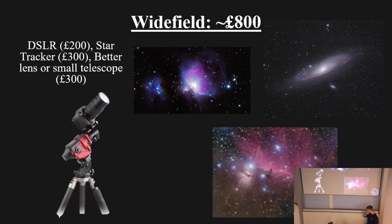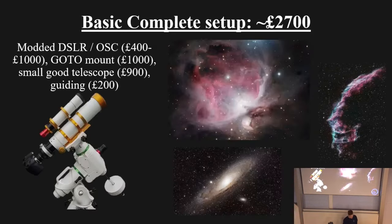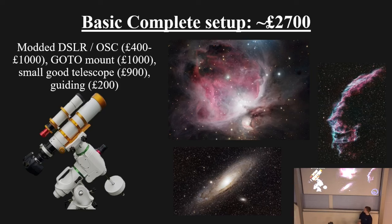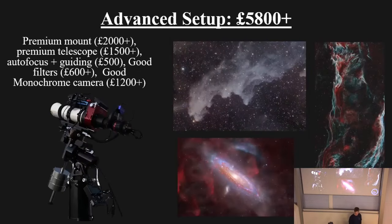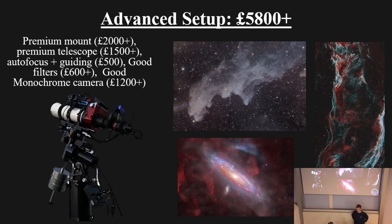Then there's a big jump to the complete setup: a bigger telescope, a go-to mount, a modified or dedicated one-shot colour astrophotography camera, and guiding — giving much longer exposures and much more detail. Finally, the advanced tier with premium mounts, premium telescopes, autofocus motors, monochrome cameras with filter wheels — and that's where you get the really fantastic images you see in award-winning prints. If you've ever seen images that people sell for too much money, this is the sort of equipment used to produce them — normally combined with dark skies as well.